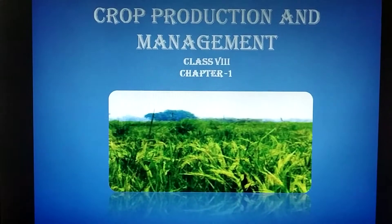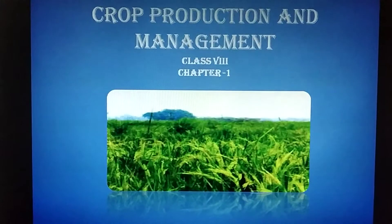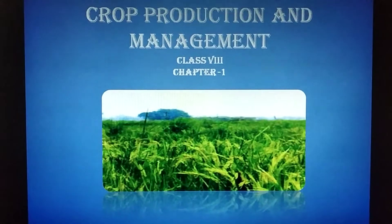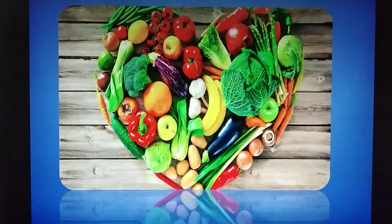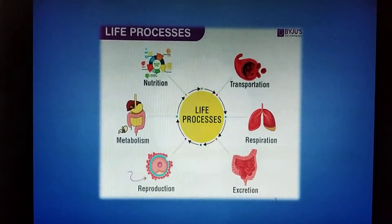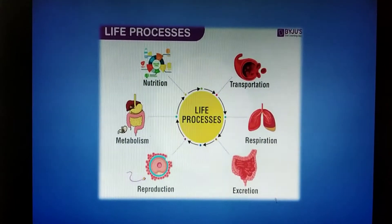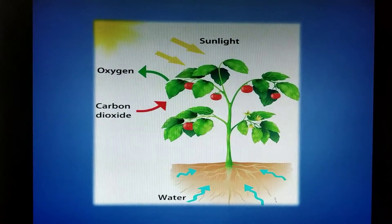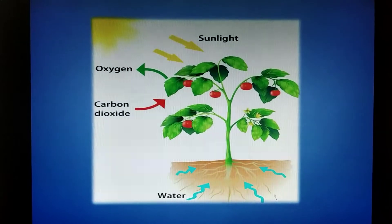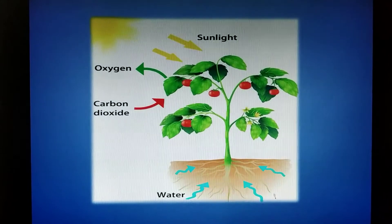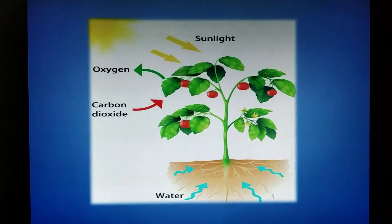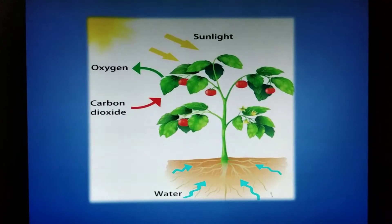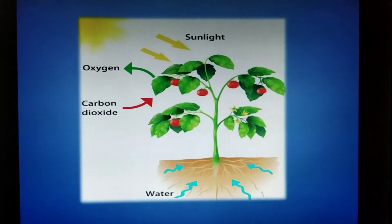Hello students, today we are going to start our first chapter of science: Crop Production and Management. We all need food to live, for carrying out various life processes like digestion and respiration, and we get the required energy from food. Plants prepare their own food by the process of photosynthesis. Now, with our large population, food has to be grown on a large scale, and for that we adopt various agriculture practices.